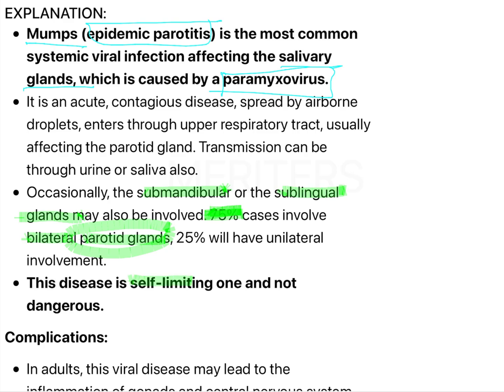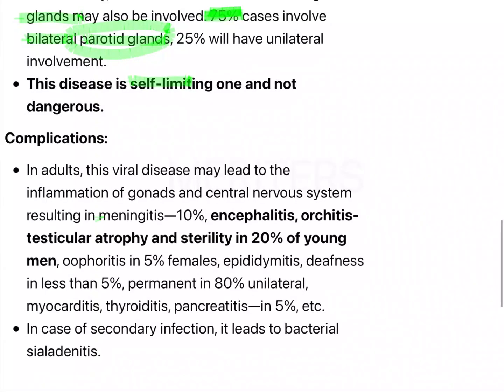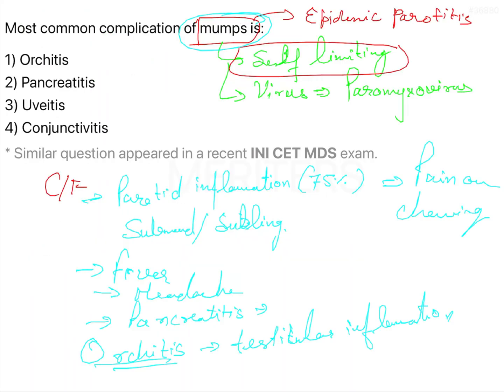This disease is self-limiting and not dangerous. Other complications include meningitis in 10 percent of cases, encephalitis, and orchitis with testicular atrophy and sterility in 20 percent of young men. In this question, orchitis is the given option, and it is more common than pancreatitis. Parotitis is more common than orchitis.